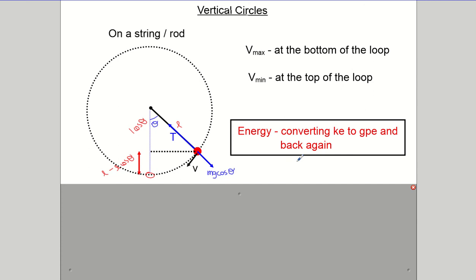Whereas before we had f equals mv squared over r and f was T sin theta for horizontal circles, now the force towards the center is tension T but acting in the same line in the opposite direction is mg cos theta. So we have: T minus mg cos theta equals mv squared over r, where r equals l. This formula for working out the tension in the string works no matter where you are in the circle — even in the top half — because when theta becomes more than 90 degrees, cos theta goes negative, which swaps the direction for us.